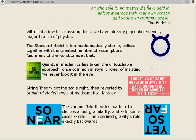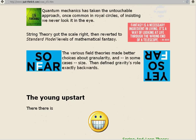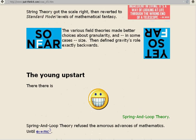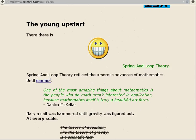The young upstart. Then there is spring and loop theory. Spring and loop theory refused the amorous advances of mathematics until e sub t equals mc cubed. One of the most amazing things about mathematics is the people who do math aren't interested in application, because mathematics itself is truly a beautiful art form. Danica McKellar. Nary a nail was hammered until gravity was figured out, at every angle. The theory of evolution, like the theory of gravity, is a scientific fact. Neil deGrasse Tyson.